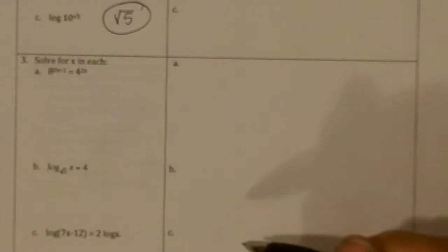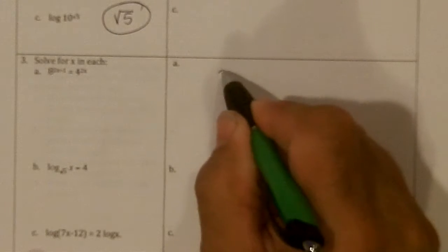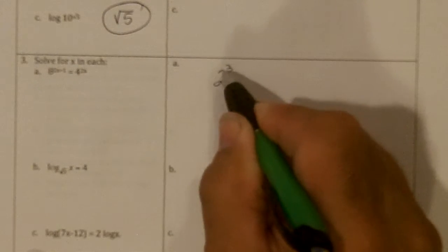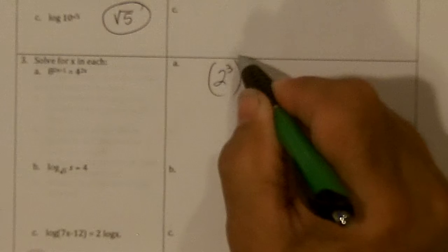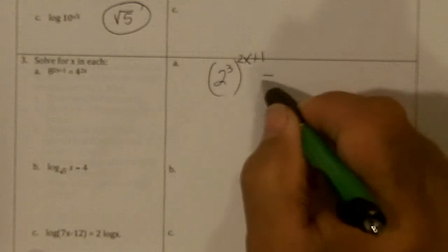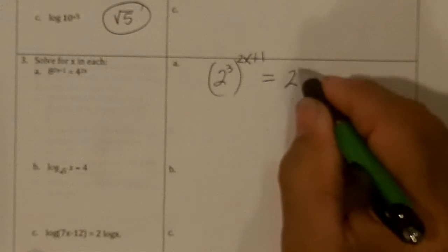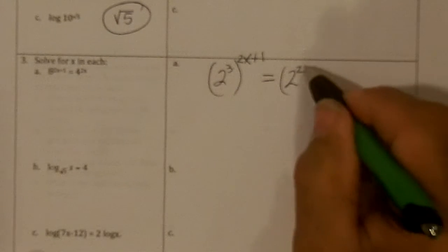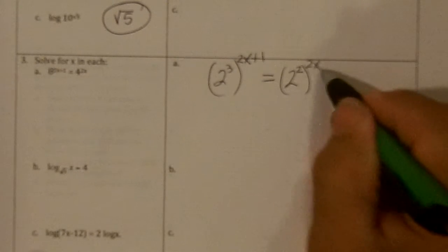8 and 4 both have in common a 2, so we can call this 2 to the 3rd to the 2x plus 1 equals 2 to the 2nd, that's what 4 is, to the 2x.